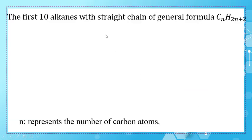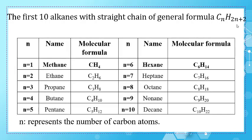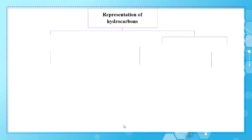The first 10 straight chain alkanes follow the general formula CₙH₂ₙ₊₂. When n=1, we get methane with molecular formula CH₄. When n=2, we get ethane with formula C₂H₆. You can notice that all these names end in '-ane': methane, ethane, propane, butane, pentane, and so on. The prefix represents the number of carbon atoms in the molecule.